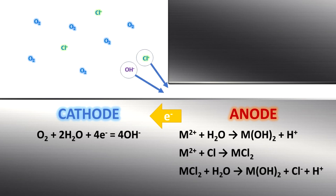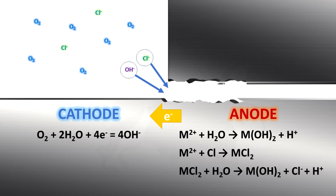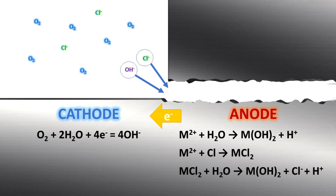In the second stage, the galvanic couple promotes corrosion in the crevice through the reduction of oxygen at the cathode. Consequently, the positive potential at the anode attracts negative hydroxide and chloride ions into the crevice. Within the crevice, the hydroxide and chloride ions react with the metal, gradually making the anodic region more acidic.